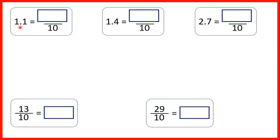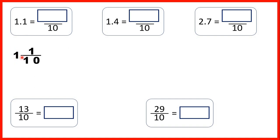1.1 is equal to how many tenths? Well, 1.1 means we have one whole, and the one after the decimal point tells us that we have one tenth. Remember, one whole is the same as ten tenths, so if we have ten tenths and then an extra one tenth, we have eleven tenths altogether.